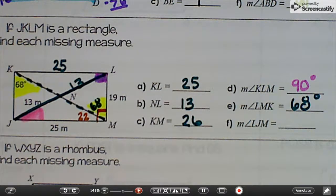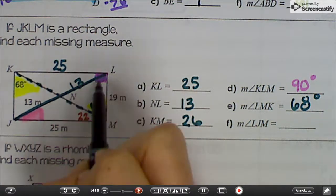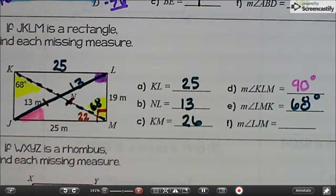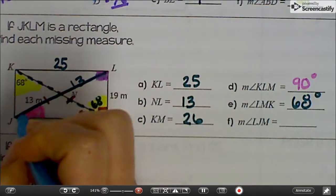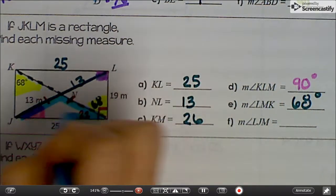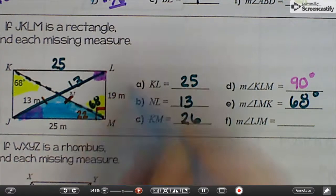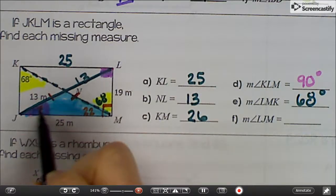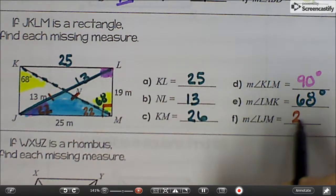Because in a rectangle, diagonals are congruent and they bisect each other, and we end up with an isosceles triangle here. And I'm going to color that in just so you can see. See that guy? And in an isosceles triangle, base angles are congruent. So that other angle has to be 22 degrees.